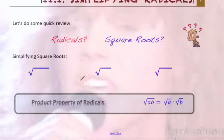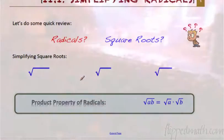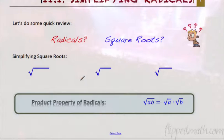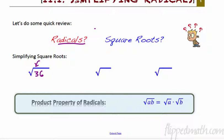Square root. We have two different words here that are basically used interchangeably, with a slight technicality. They're a little bit different from each other. We have radicals — the radical is the actual symbol we're using — and a square root. The square root is the number that you multiply times itself to give you whatever is underneath the radical.